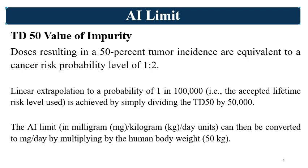Once you have the TD50 value — the dose leading to tumours in 50% of the population — you perform a linear extrapolation to a probability of 1 in 100,000 species, which is the acceptable lifetime risk level. This is achieved by simply dividing the TD50 by 50,000. The AI limit in mg/kg/day units can then be converted to mg/day by multiplying by the human body weight.